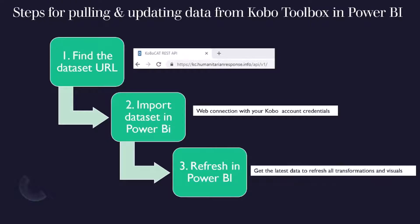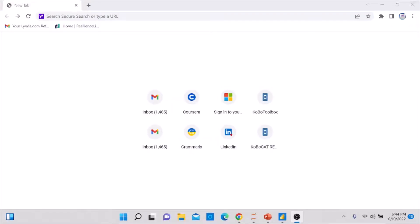The third step, which we will mostly cover in the second video, is to refresh the dataset in Power BI. Refreshing means getting the latest data, refreshing all the transformations and columns you've made, and refreshing all the visuals in Power BI. Let's now go over the first step: retrieving the URL for the dataset in your Kobo account.